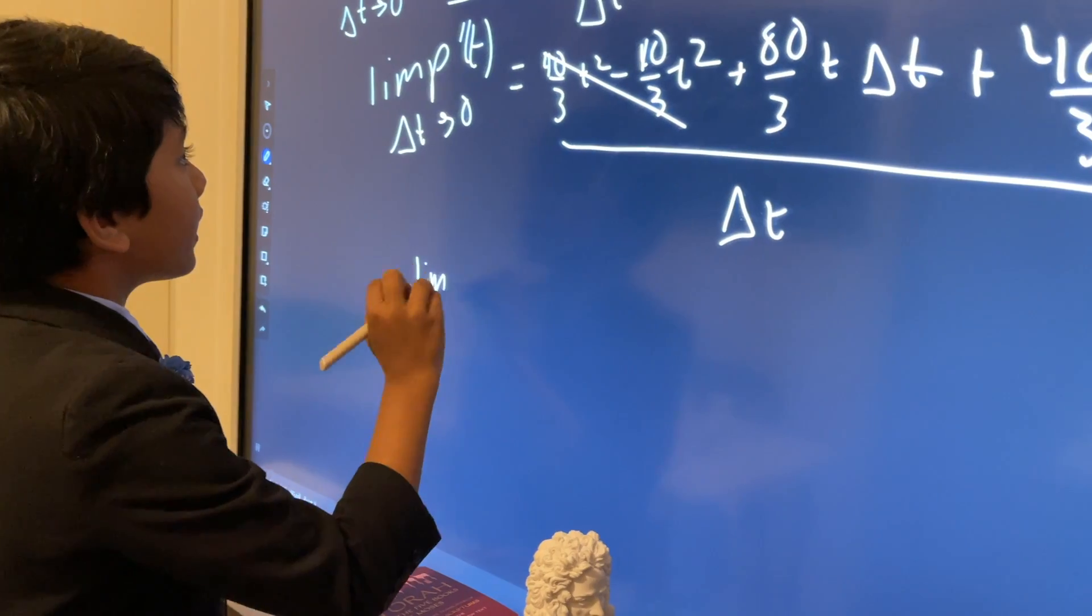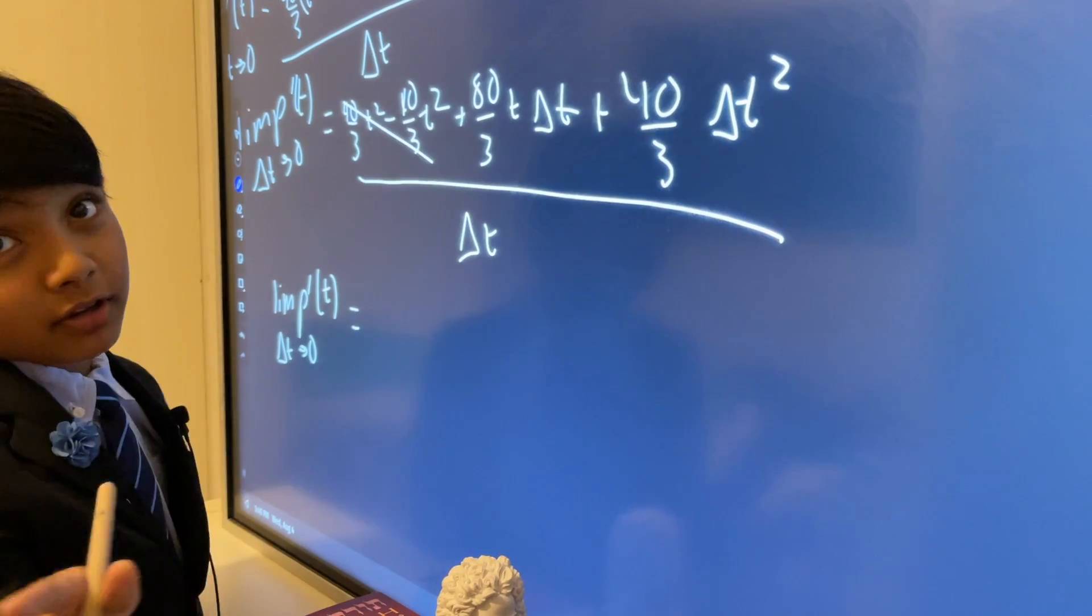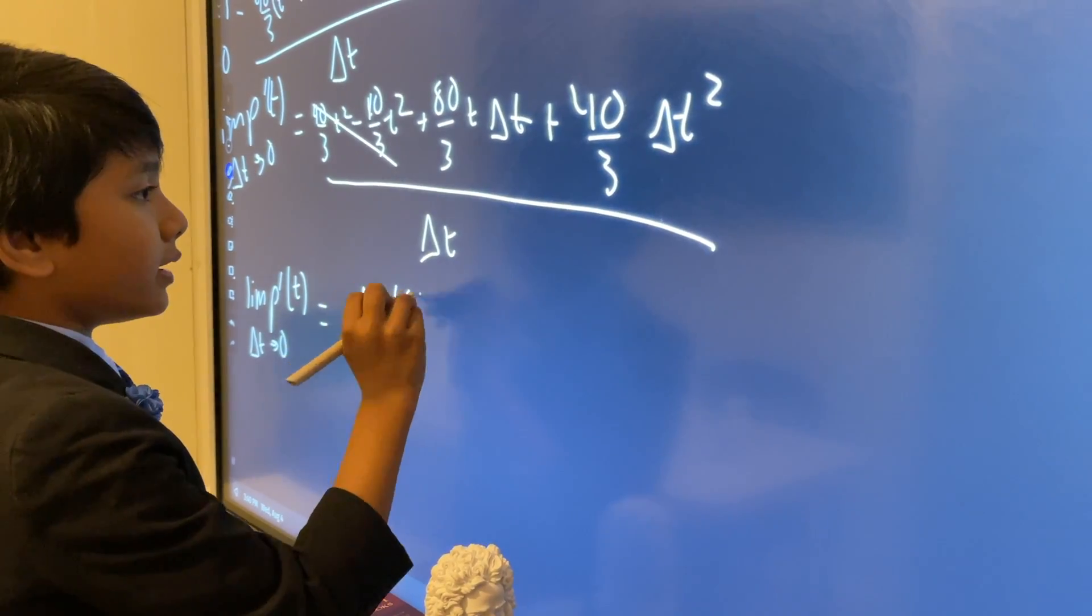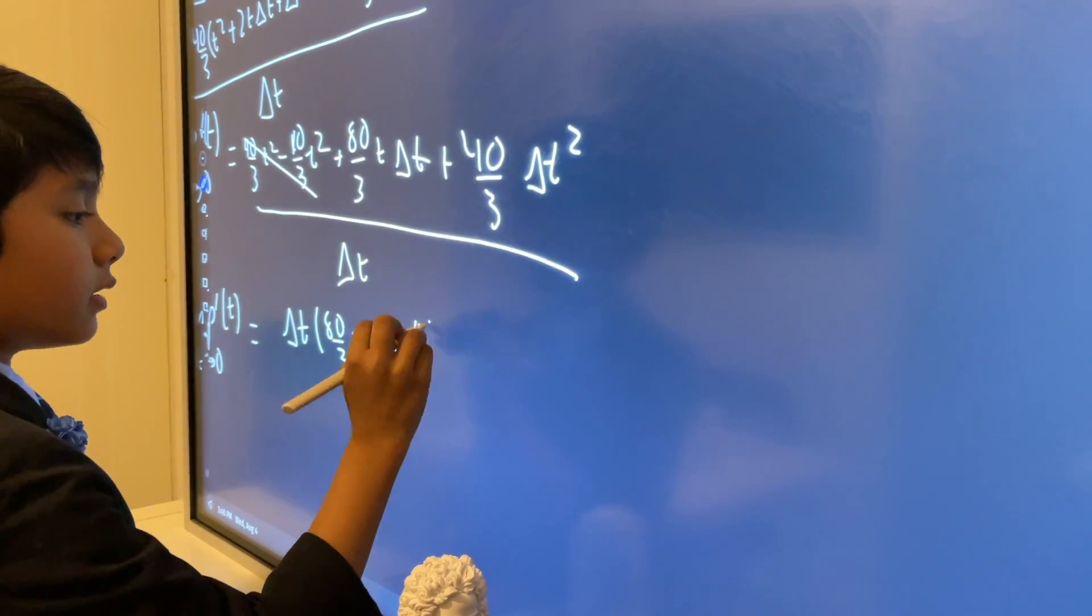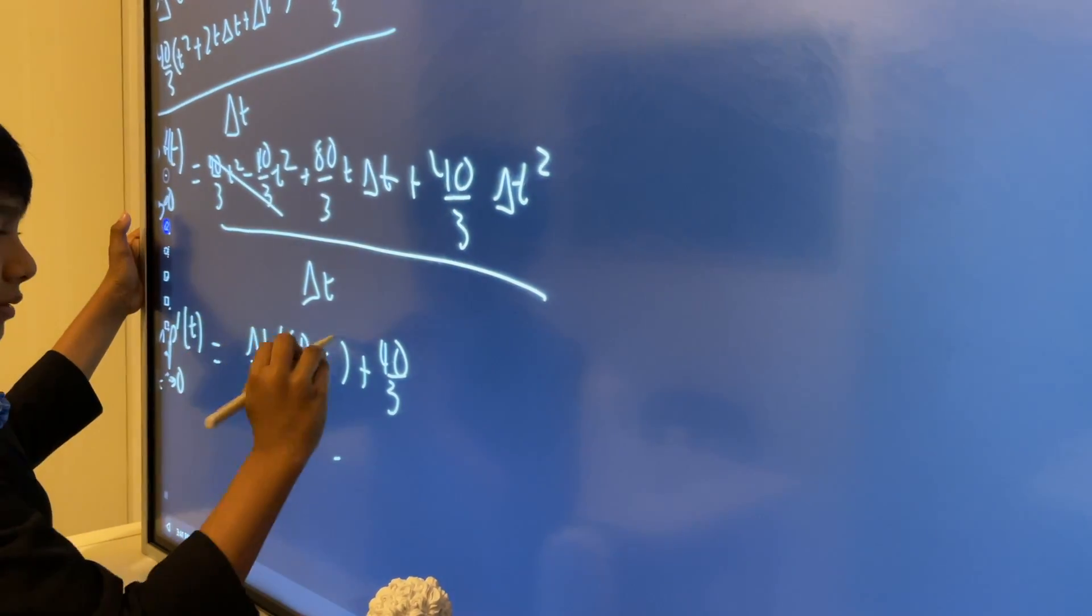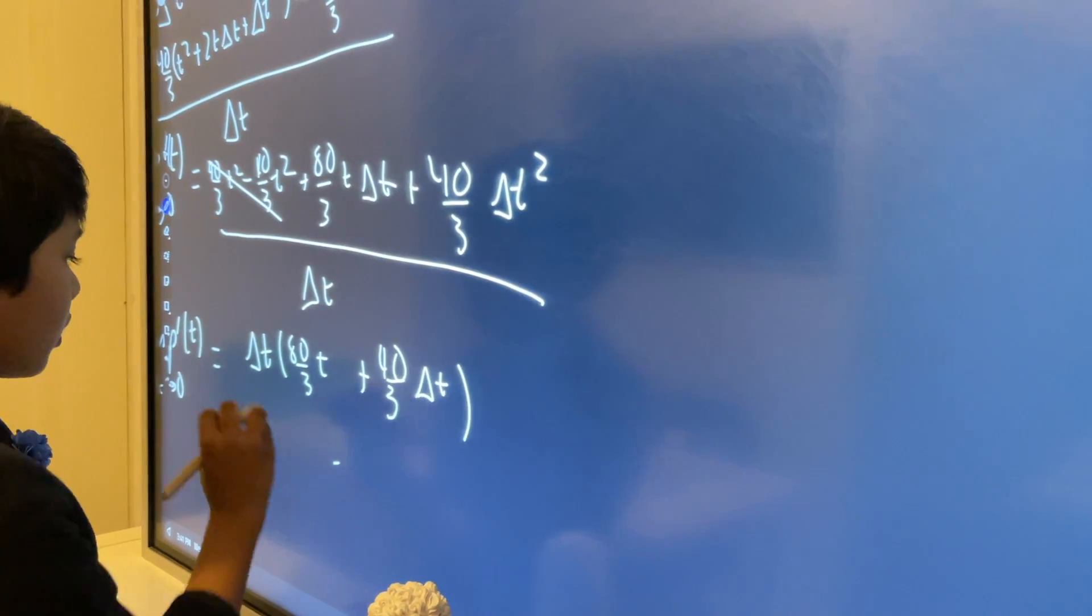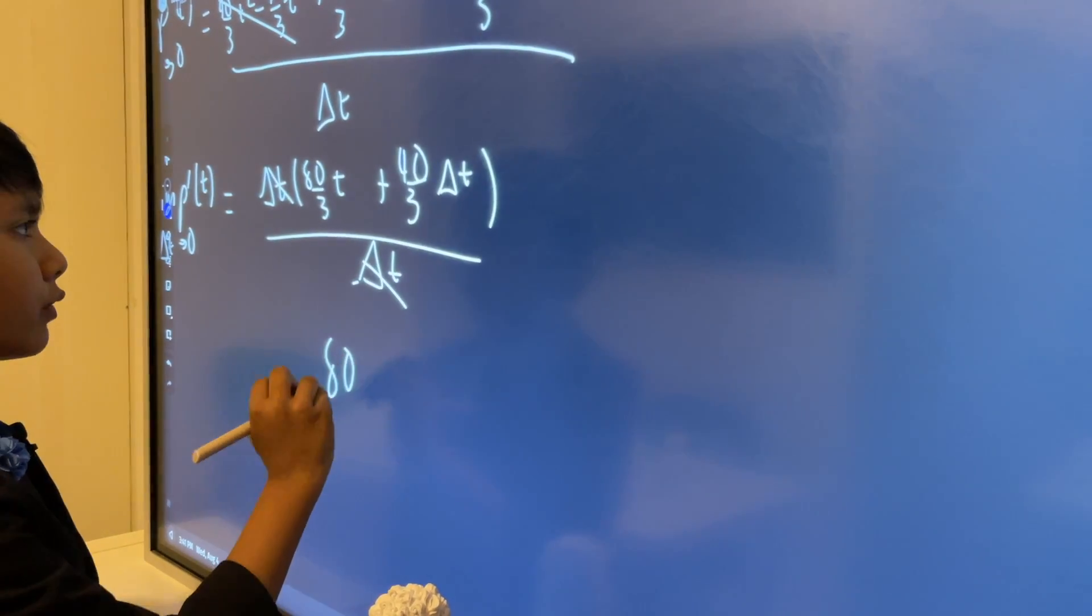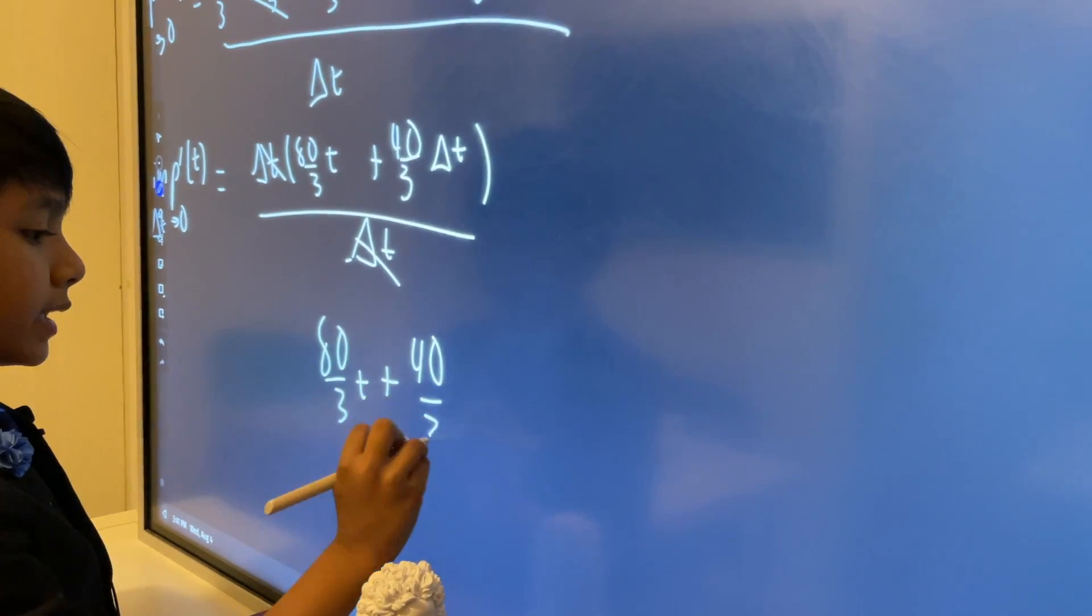Limit is p prime of t as delta t goes to 0. You know what? Let's just factor out delta t, 80 over 3 t plus 40 over 3 delta t. I forgot to put the parentheses. Well, divided by delta t, these cancel out, giving us 80 over 3 t plus 40 over 3 delta t.